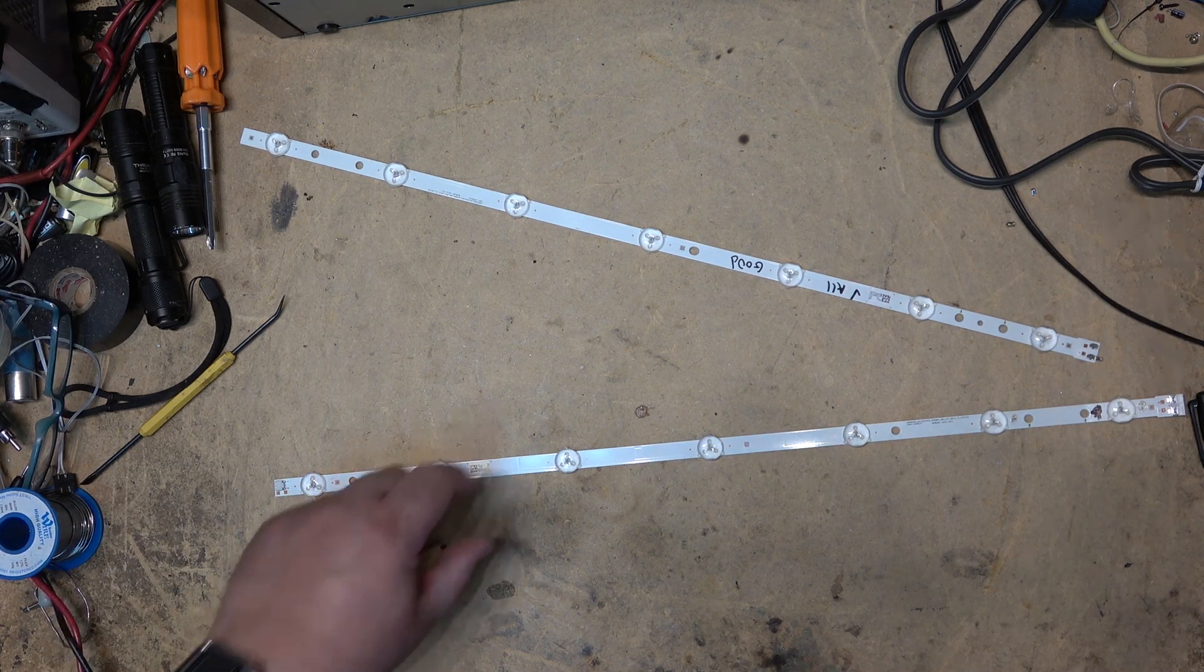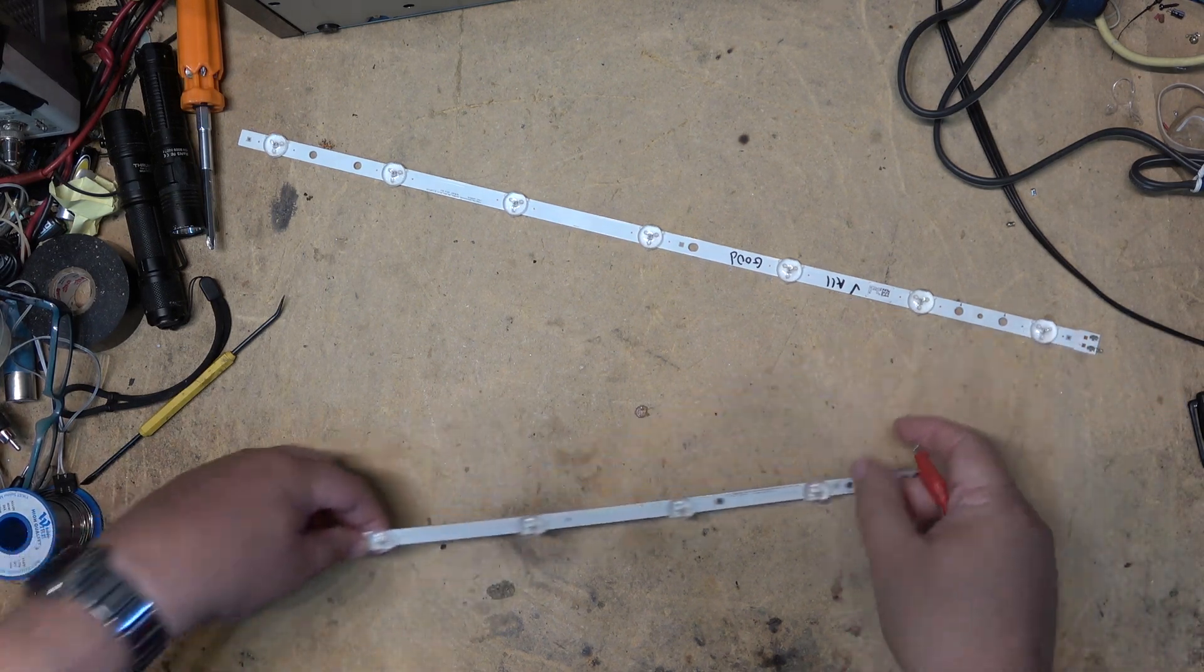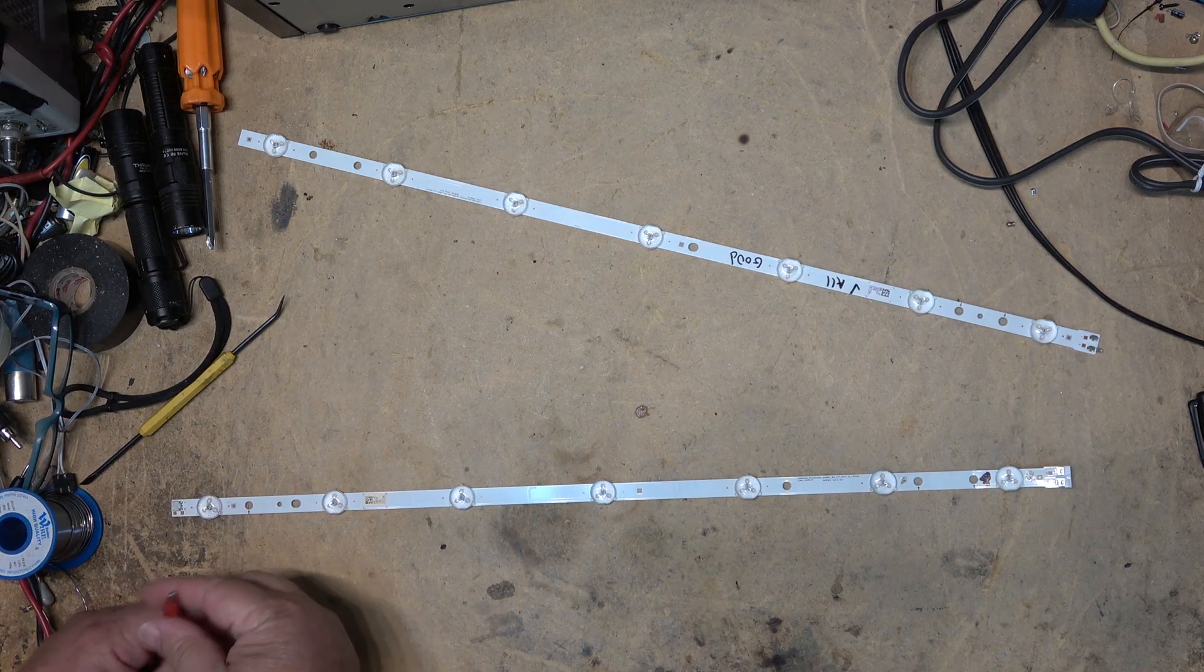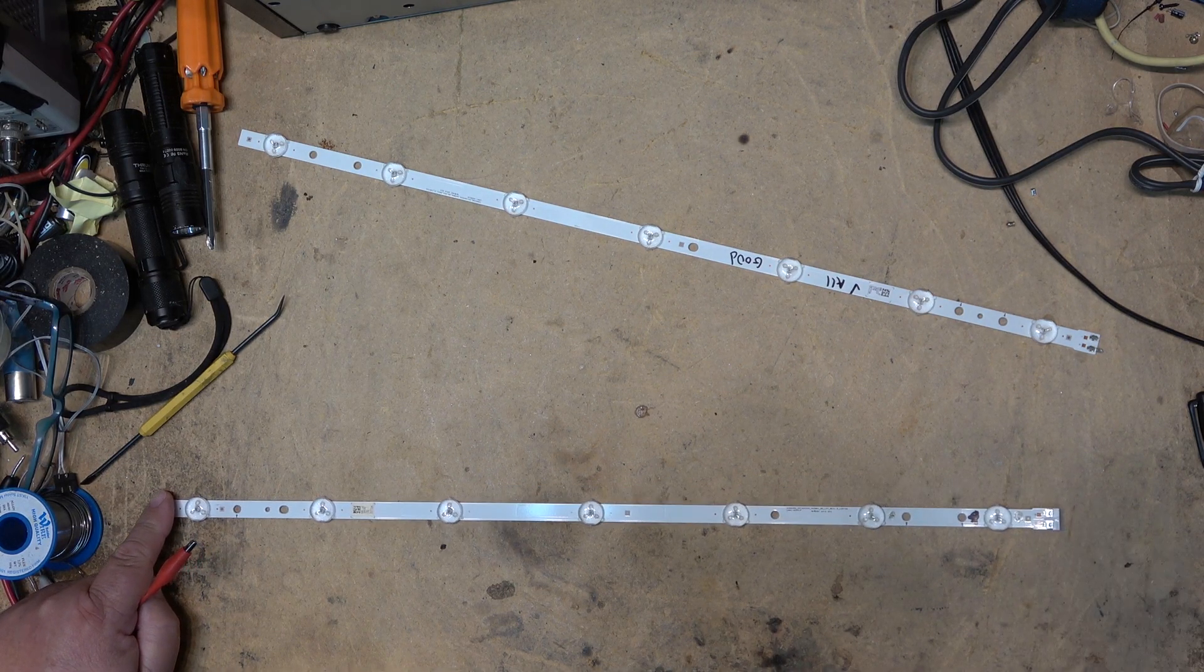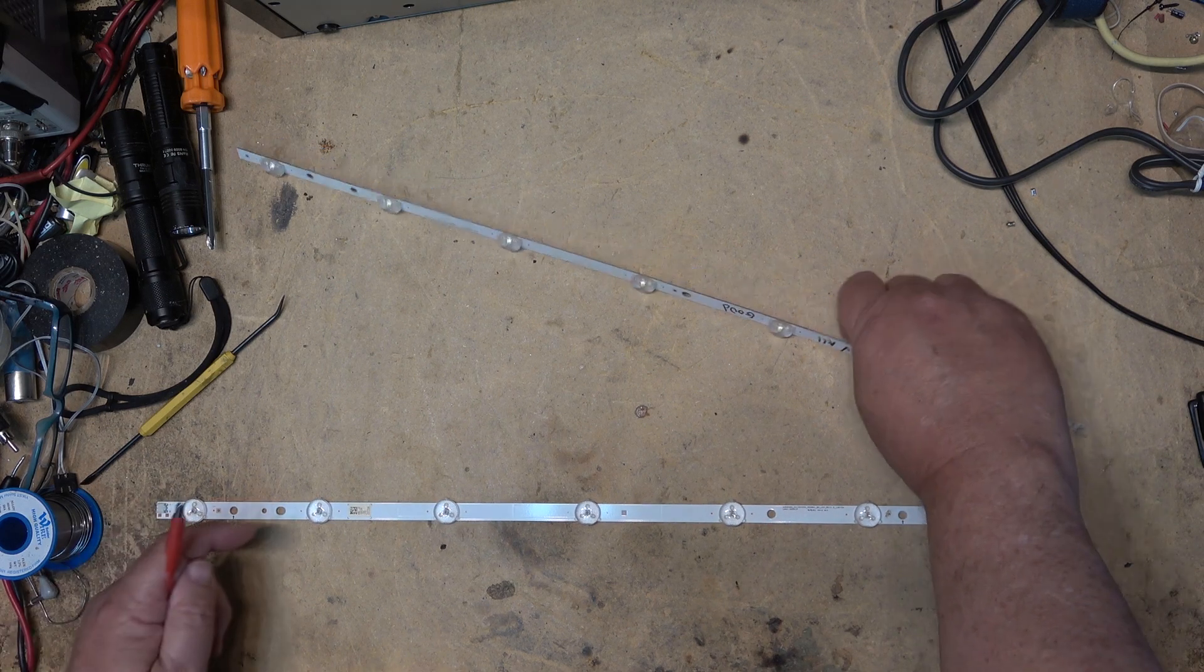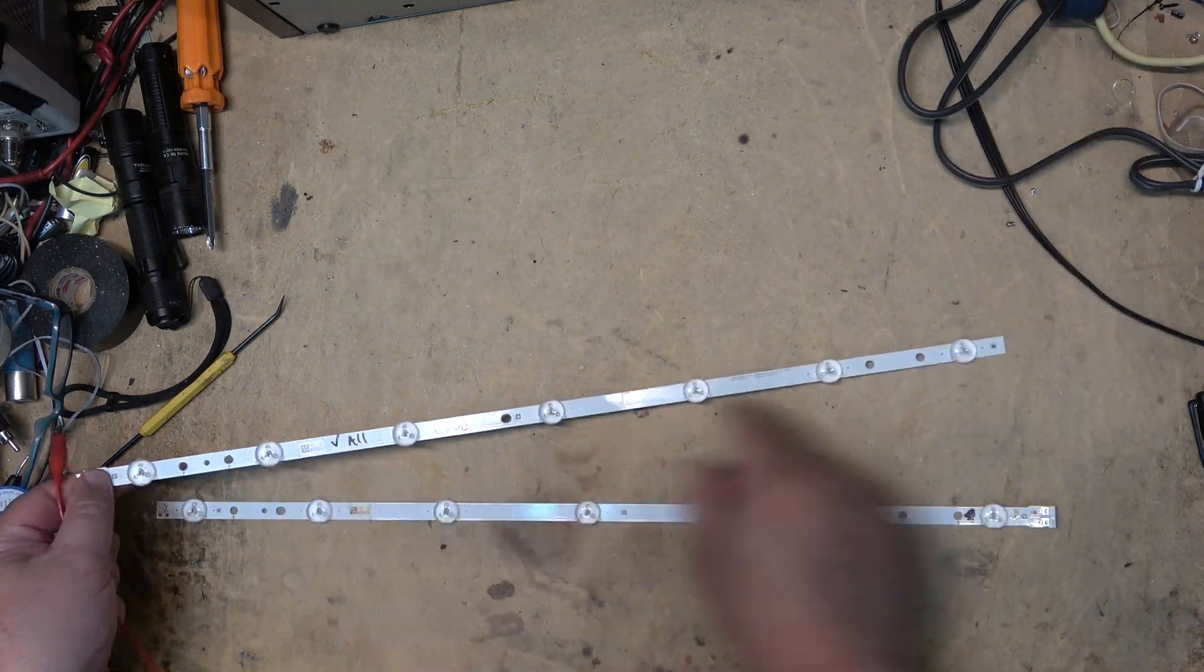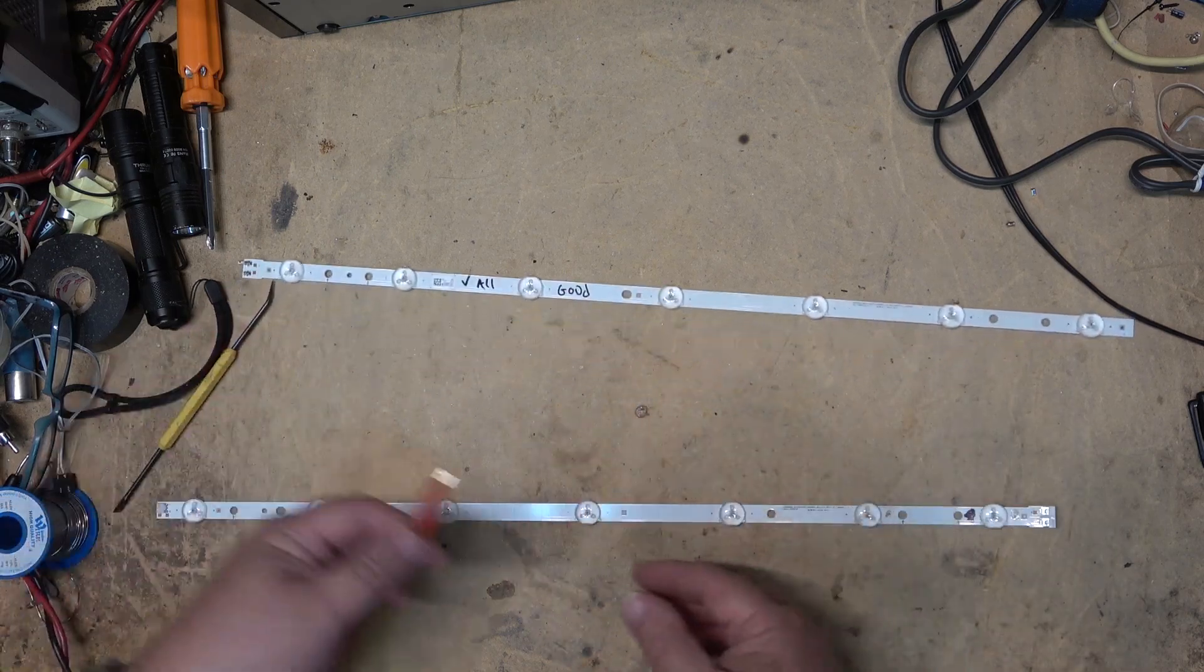So basically how these were wired from the factory is it goes through all the LEDs and then out one side, and the other one all the way through the other LEDs that are plugged in, and then they are shorted at the end and they come back.